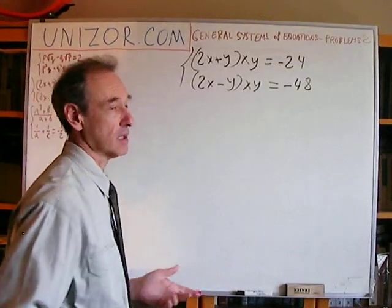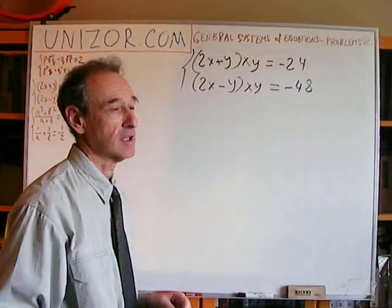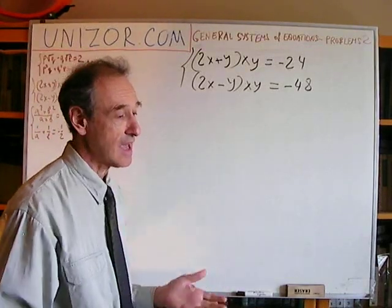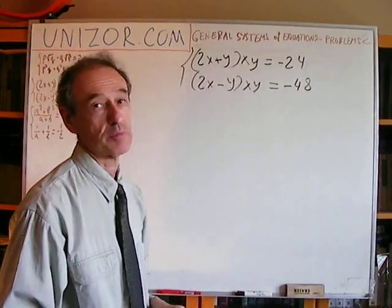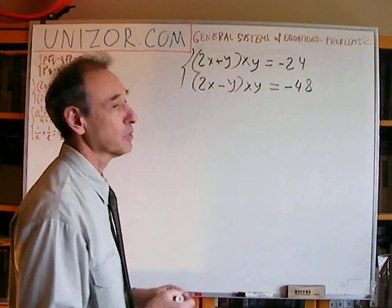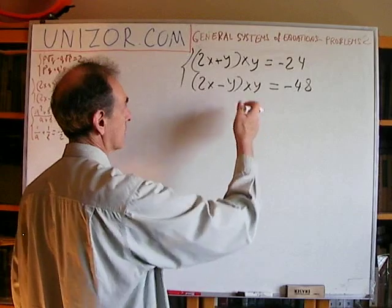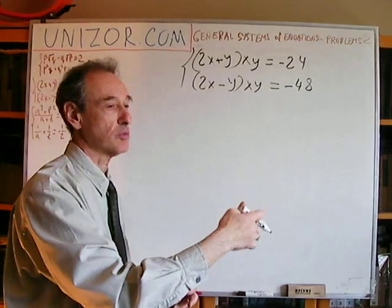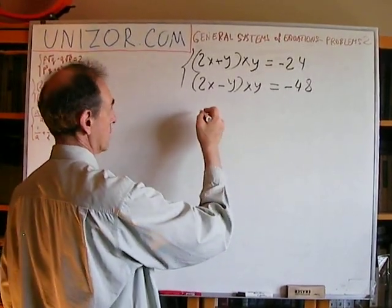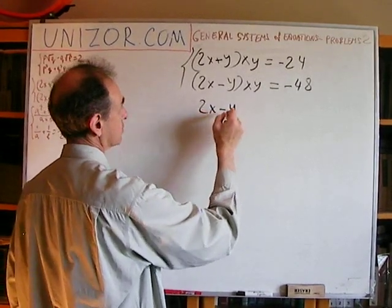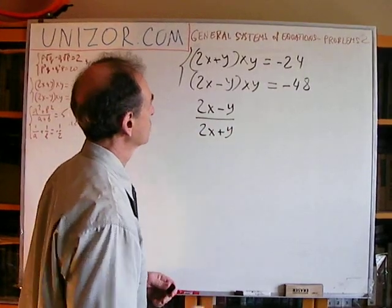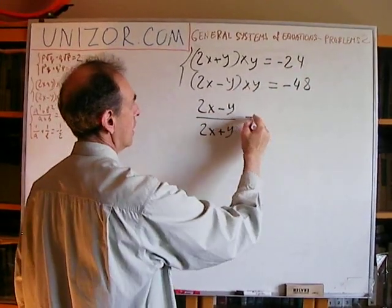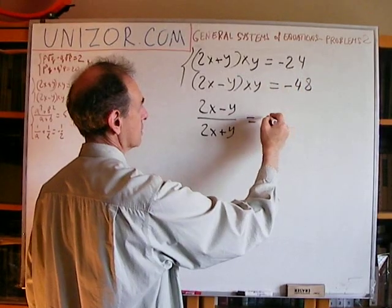Let's look at this system. XY appears in both equations. Besides, 24 and 48 look alike — one is twice as much as the other. I think it's a good idea to divide one equation by the other. XY appears in numerator and denominator so it cancels — and it's not equal to zero, otherwise the right sides would be zero. So on the right we have minus 48 divided by minus 24, which is 2.